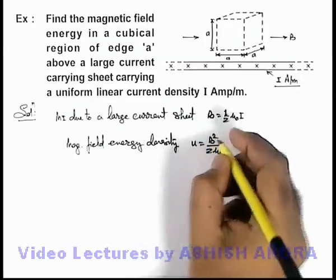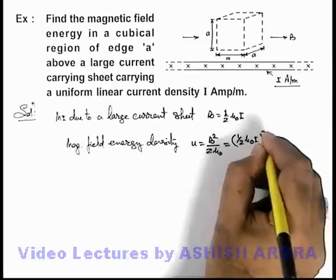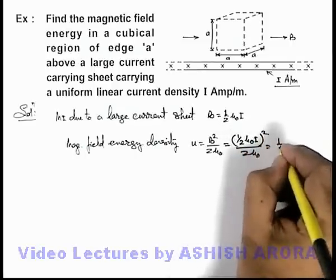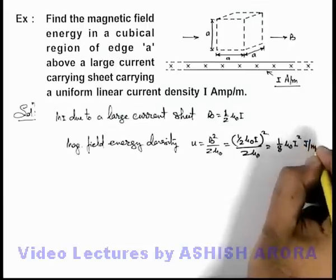If we substitute the value of magnetic induction here, it'll be (1/2 μ₀I)² divided by 2μ₀. This will give us 1/8 μ₀I². This is in joule per meter cube.